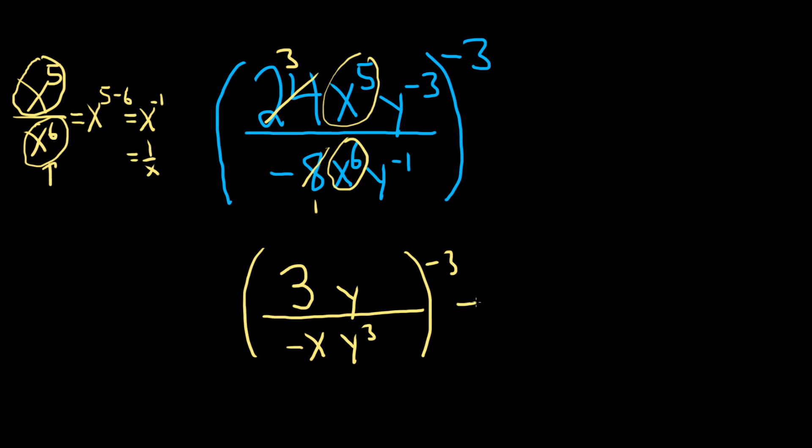Then in the next step, I would cancel the y's. So this will be three over negative x. And then using the same mentality, you have one y here. You have three of them here. So you're going to lose one of them on the bottom. So you're left with two, right? If you have three on the bottom and you lose one, you're left with two. And this is to the negative three.